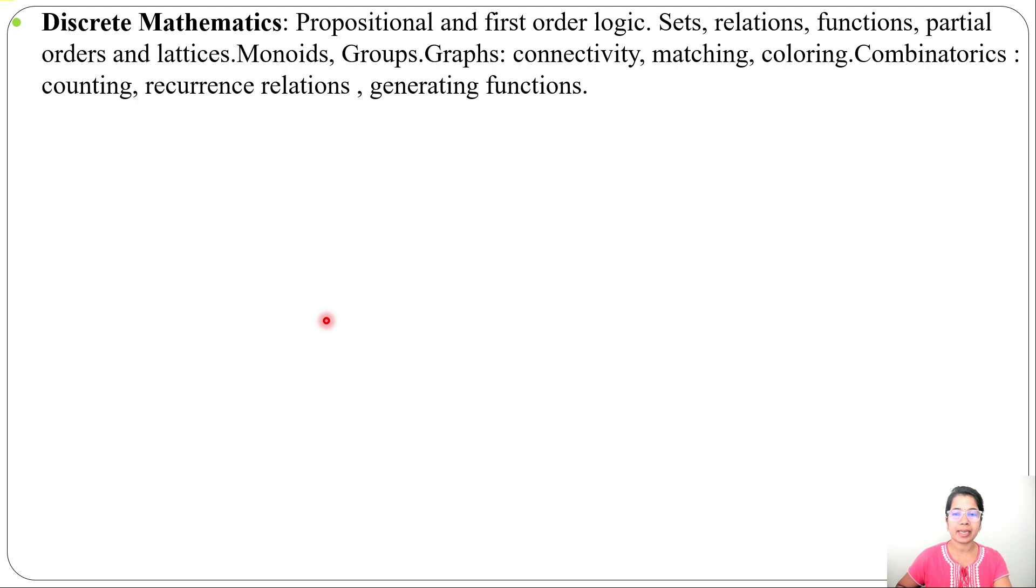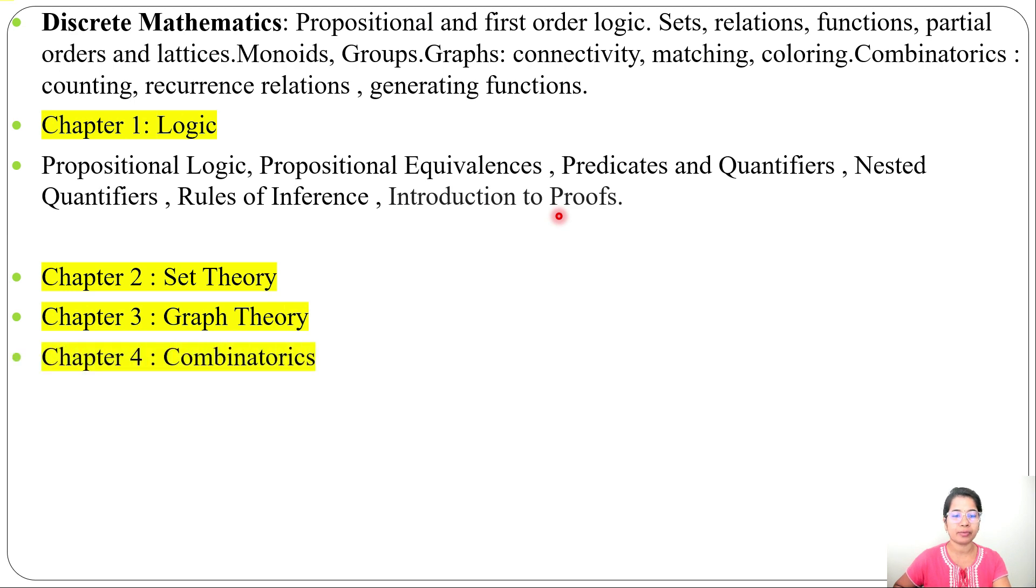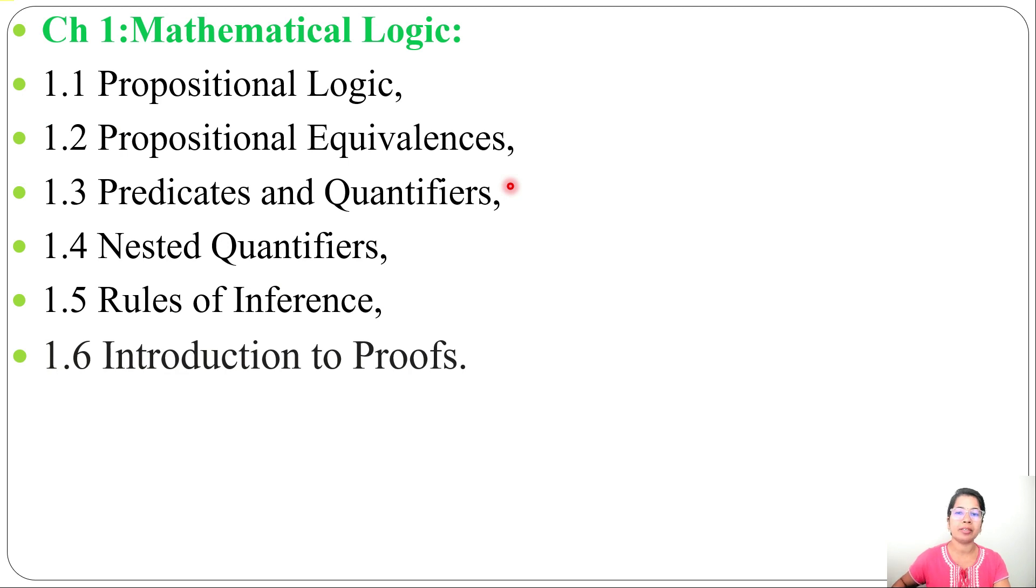Discrete Mathematics I'm dividing into four chapters. Chapter 1: Logic - I will discuss Propositional Logic, Propositional Equivalence, Predicates and Quantifiers, Nested Quantifiers, Rules of Inference, and Introduction to Proof. Chapter 2 is Set Theory, Chapter 3 is Graph Theory, and Chapter 4 is Combinatorics. For Chapter 1 Mathematical Logic, I'll follow Rosen's book and my notes.